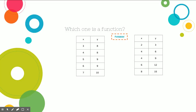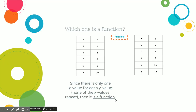Our whole goal is to see: are those x values unique, or do any repeat? On the first table, x values are 3, 4, 5, 6, and 7 — all different, so it is a function. On the second table, x values are 2, 4, 4, 6, and 8 — there are two 4's. With two x's that are the same but different y values, it is not a function.